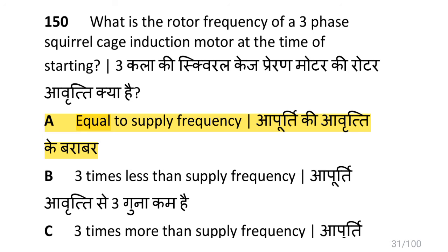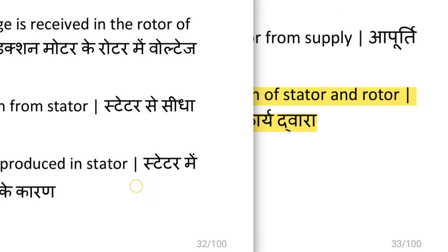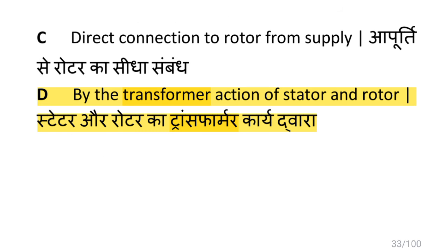The rotor frequency of a three phase squirrel cage induction motor at the time of starting is FR equals FS — that is, rotor frequency equals supply frequency at starting. Voltage is received in the rotor of an induction motor by transformer action of the stator and rotor.